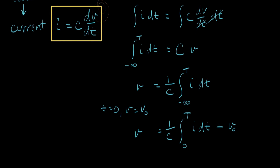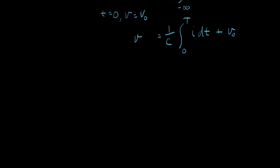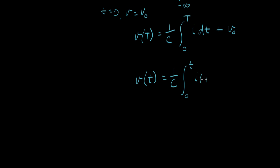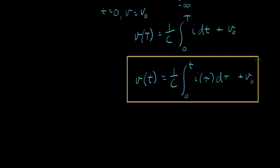I want to make one more stylistic change. We want to write V as a function of little t, with the limits on the integral from zero to little t. I'll introduce a dummy integration variable — I'll call it tau — so the equation becomes V(t) equals one over C times the integral from zero to t of I(tau) d-tau, plus V-naught. This is the integral form of the capacitor equation.